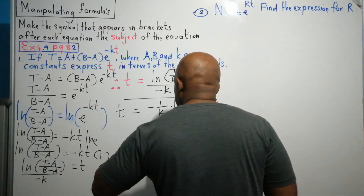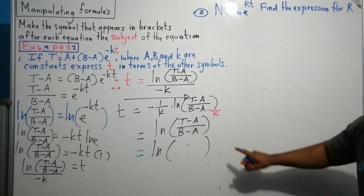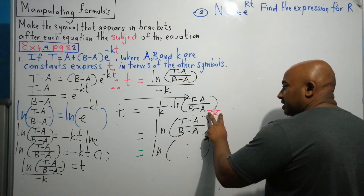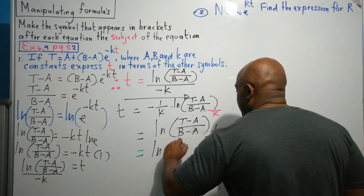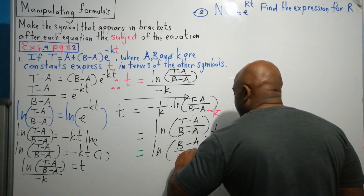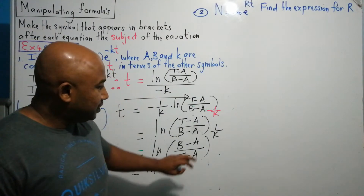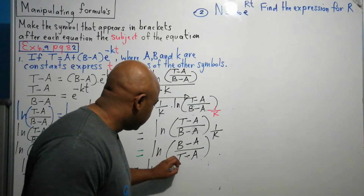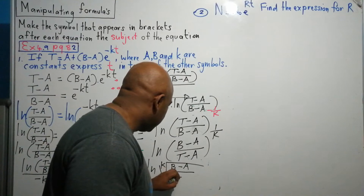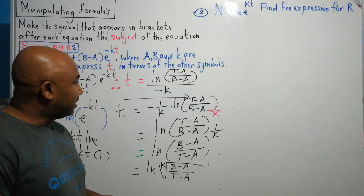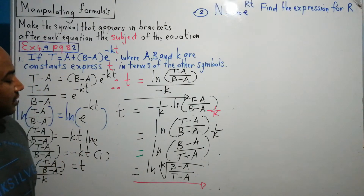Going further still, just like how we took minus KT down as an exponent, we can take an exponent back to the top. So we can write this as ln of T minus A divided by B minus A to the power minus 1 over K. Taking the negative exponent further, a negative exponent means we swap numerator and denominator: ln of B minus A divided by T minus A, all to the power 1 over K, which is the same as the K-th root of B minus A divided by T minus A. This is unnecessary in the exam, but shows how answers can be simplified using log laws.